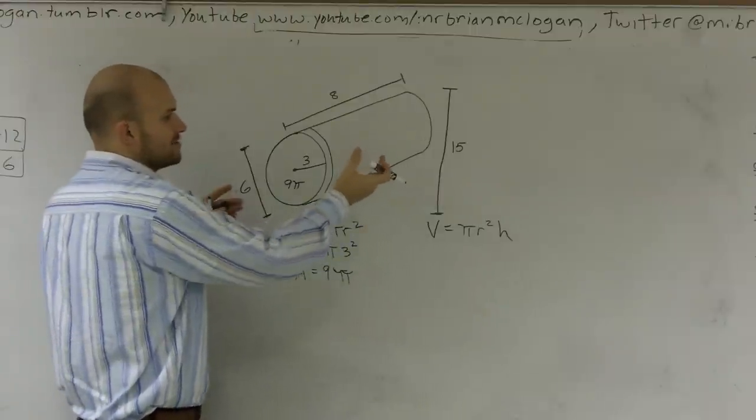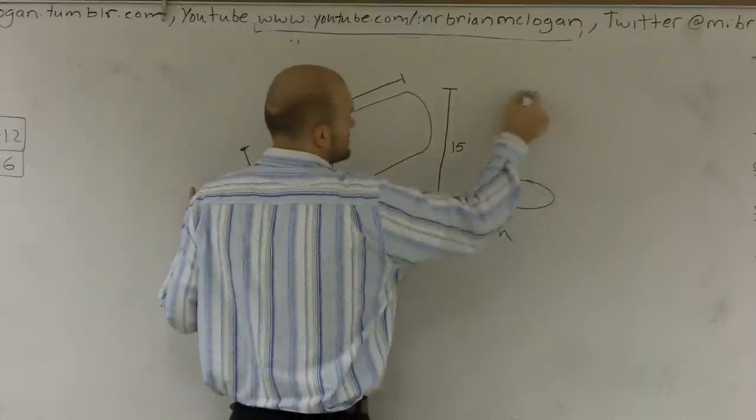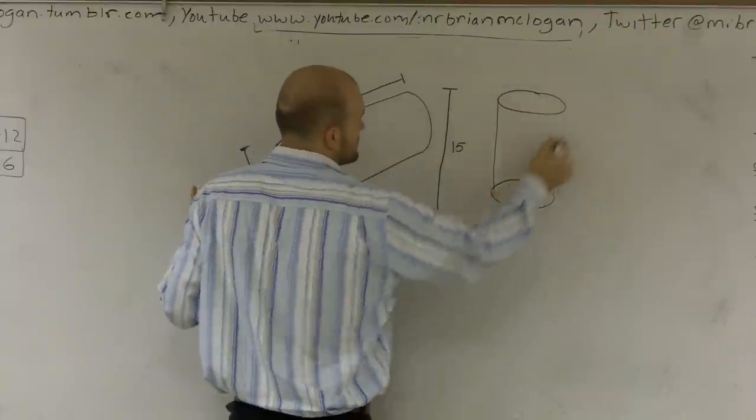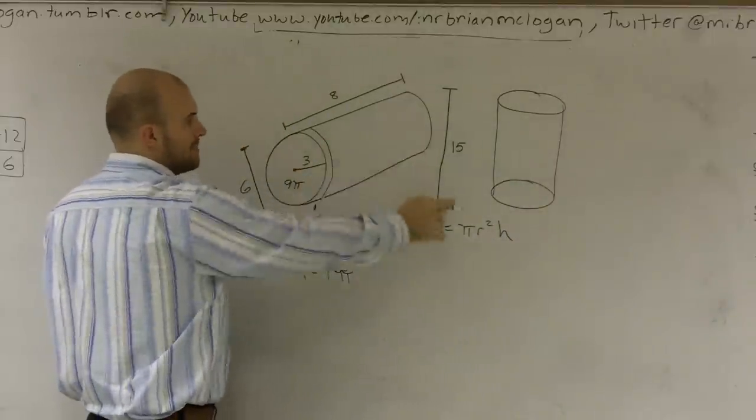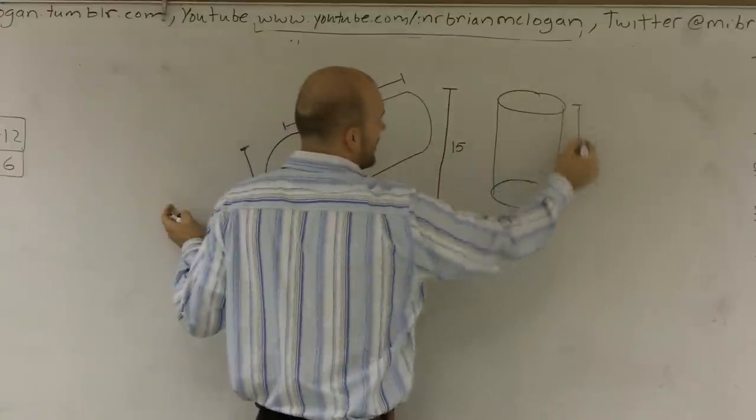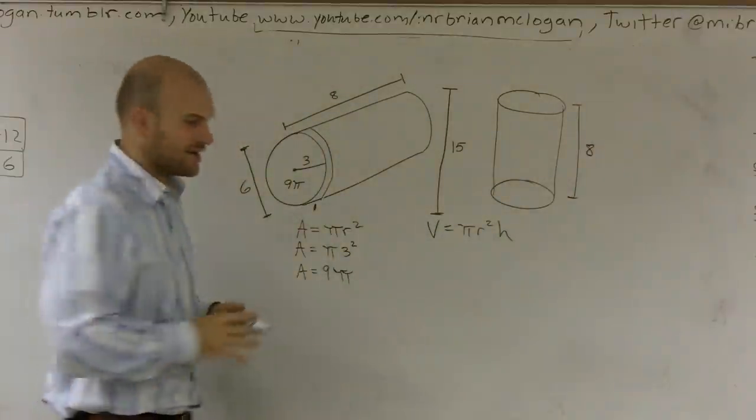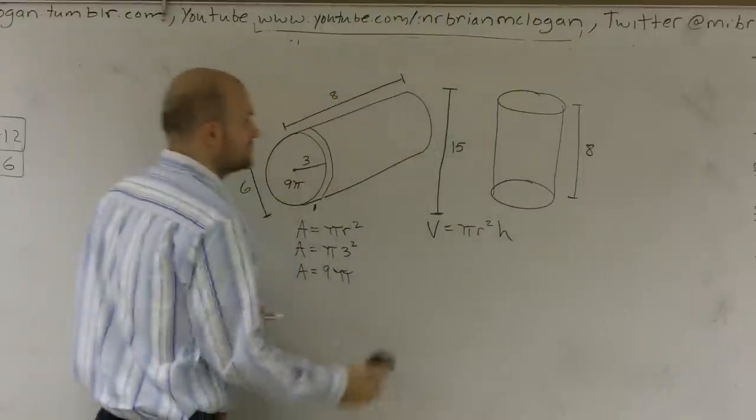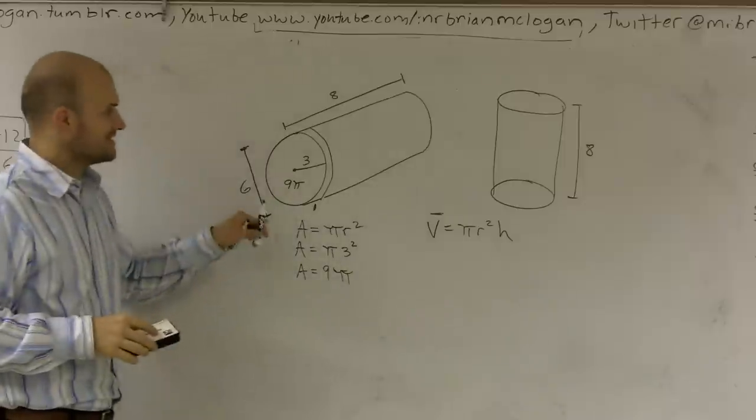But when you're calculating the height, you always want to calculate it from base to base. So if I was to lay my cylinder in that formation, I would notice that the height is going to be 8. This 15 is pretty much an irregular number. I just kind of threw up there to confuse you. Sorry.